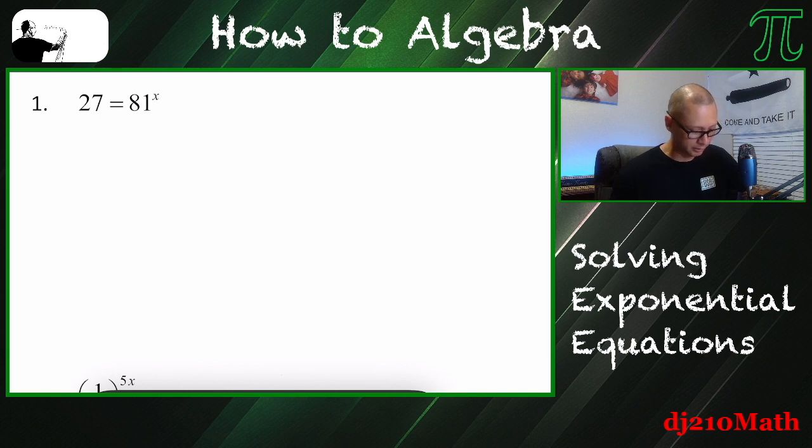81 being the base, and x being the exponent. I want to rewrite it so that the base of each number matches. So what I'm saying is, you have to somehow think, okay, I need a number that's raised to a power that equals 27.